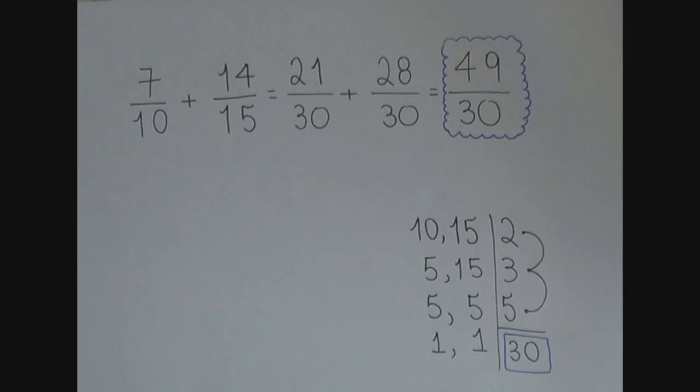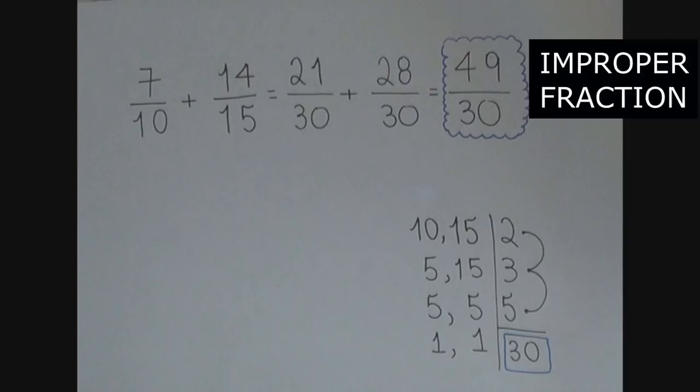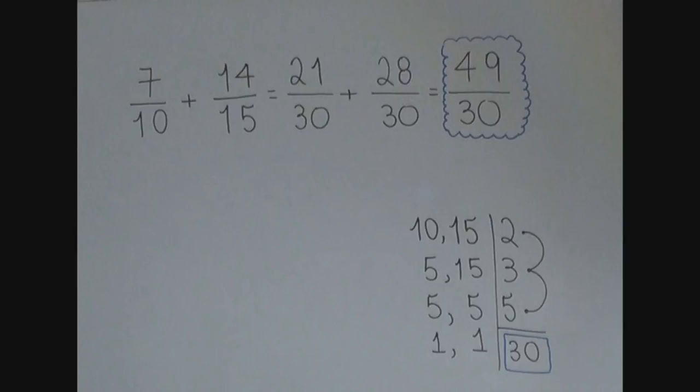Is 49 over 30 a proper or improper fraction? It is an improper fraction, since its numerator is greater than its denominator. Can this fraction still be reduced?